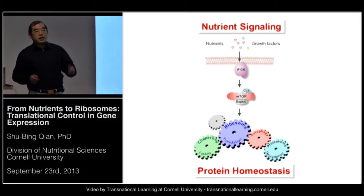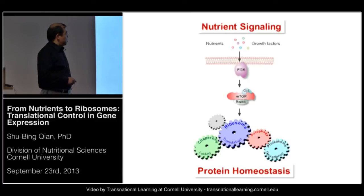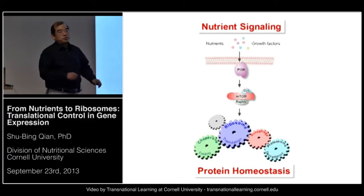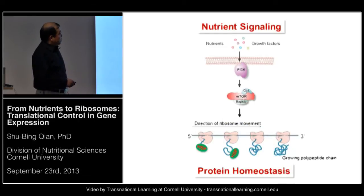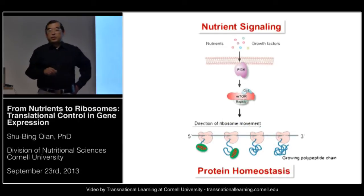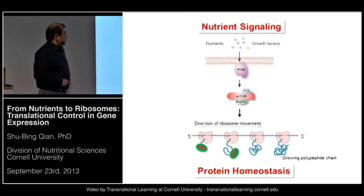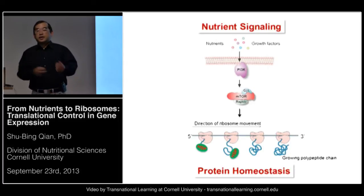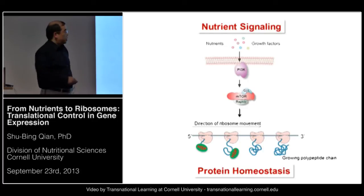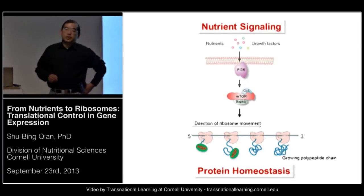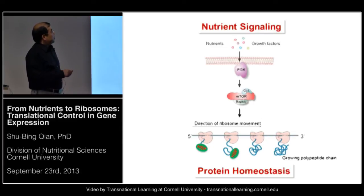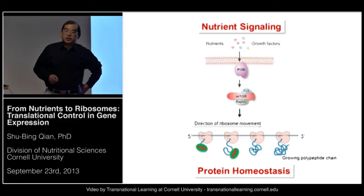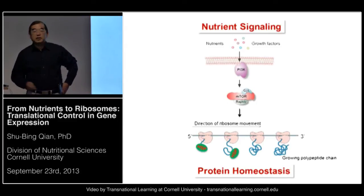Regarding the quality of translational products, this is mainly maintained by the chaperone network, which assists the folding of newly synthesized proteins. Autophagy and the proteasome system help remove defective proteins, contributing to both quality and quantity control. We know molecular chaperones play some role in protein translation. Chaperone genes are upregulated when the cell is under stress as part of the stress response. However, the synthesis of chaperone molecules differs from global protein synthesis because it relies on a cap-independent translation mechanism. We found that nutrient signaling actually influences chaperone biosynthesis by controlling the balance between cap-dependent versus cap-independent translation.